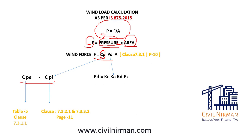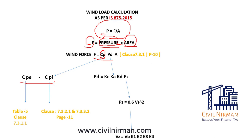From the external and internal pressure coefficients you can work out your CP value, then calculate the design pressure PD. In the latest code version, the equation is PD = KC × KD × PZ. In the older version, it was just VB with K1, K2, K3. For PZ calculation, the equation is PZ = 0.6 × VZ². VZ = VB × K1 × K2 × K3 × K4, where K4 is a new component introduced in the newer code.